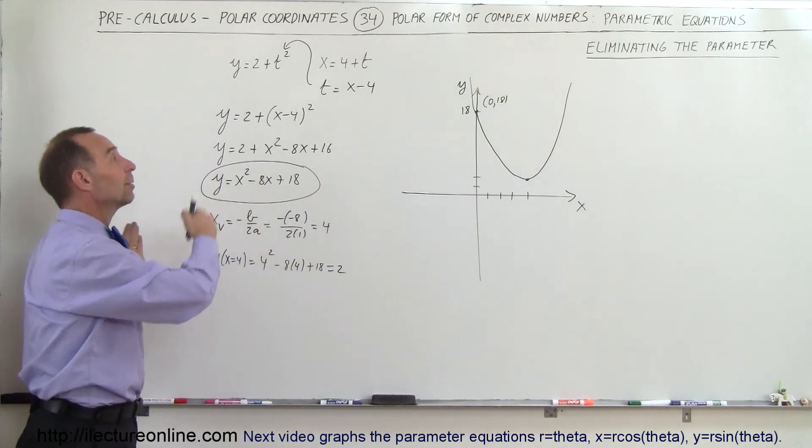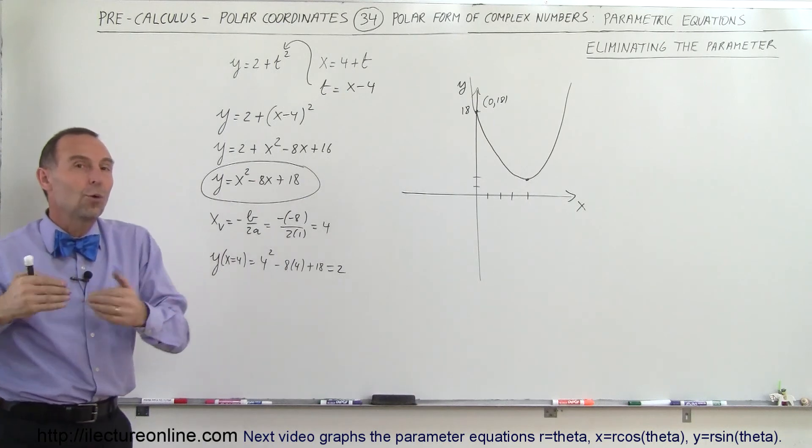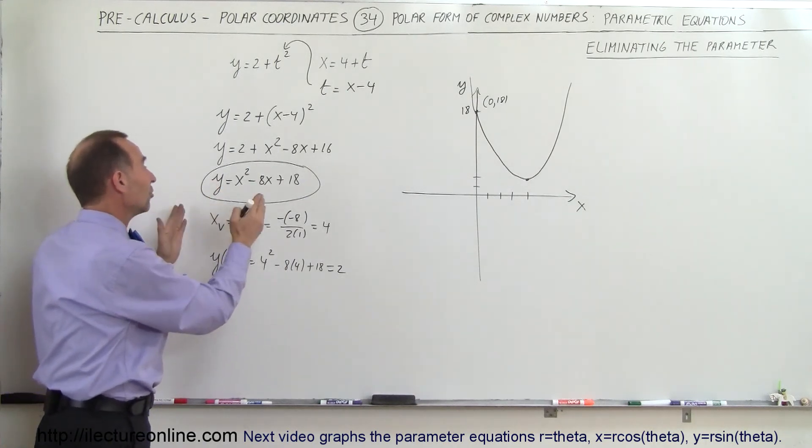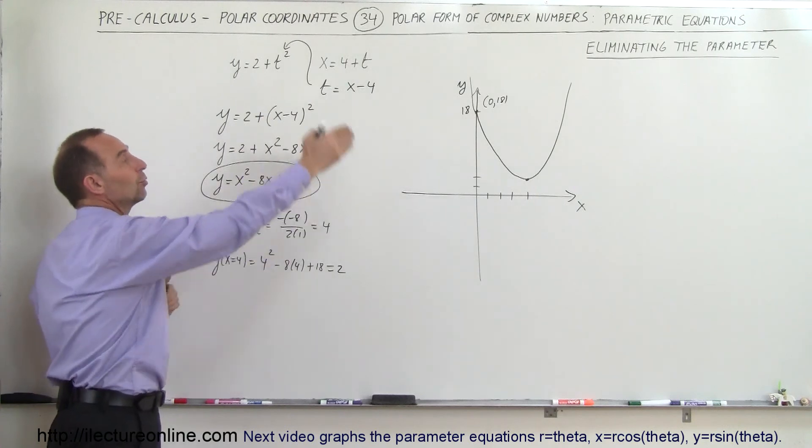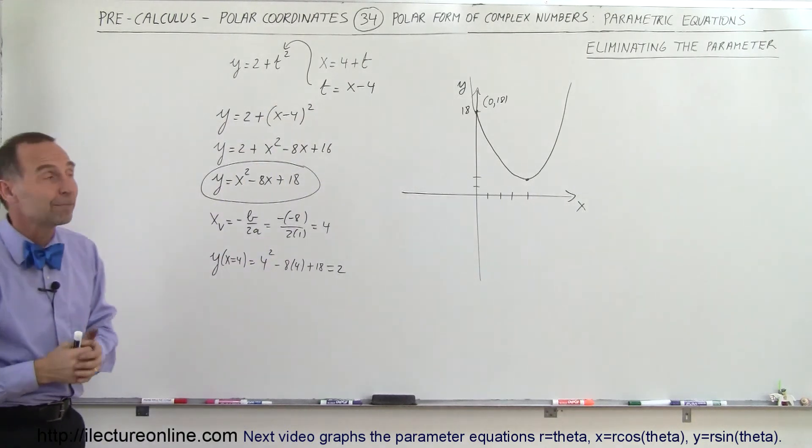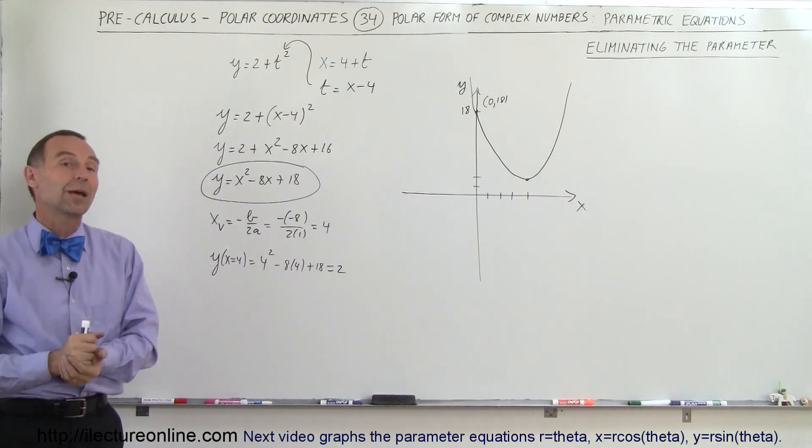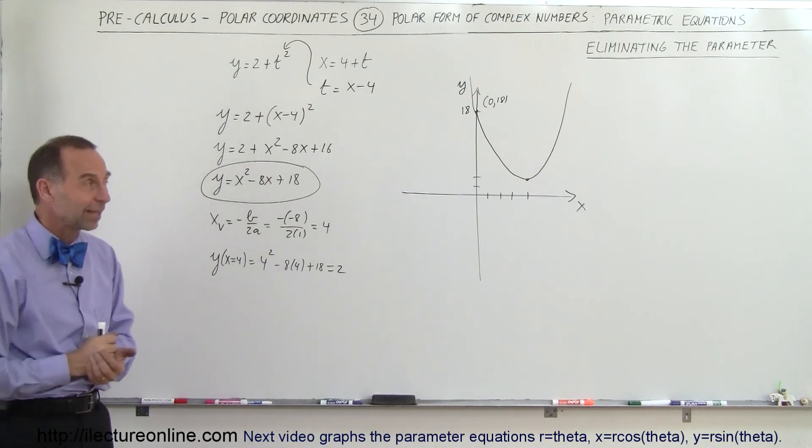If we then eliminate the parameter, we no longer know where the particle is as a function of time, but we will know the equation of the path of the particle, which we can then draw in terms of x and y. And that's how we eliminate the parameter and that's how it's done.